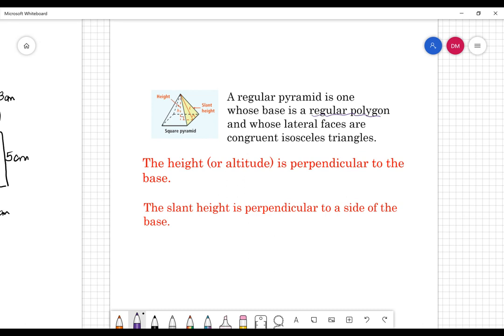So a regular pyramid has one regular polygon base. And the lateral faces here are congruent isosceles triangles. So you may have noticed that when you were working yesterday on some of the problems is that each of these lateral faces is a congruent isosceles triangle.